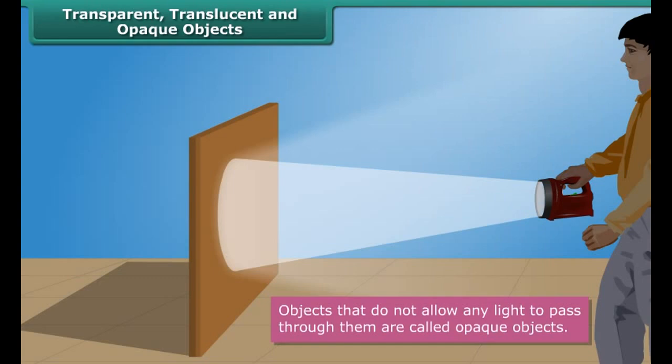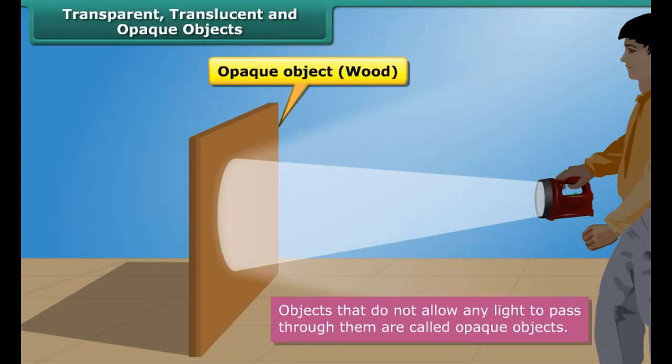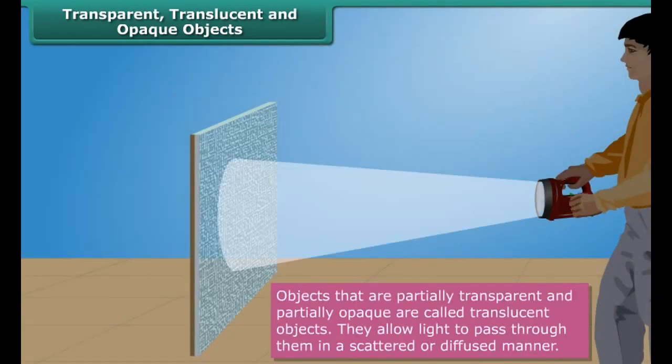Objects that allow light to pass through them are called transparent objects. Most of the light falling upon a transparent object passes through it to the other side, thereby allowing us to see through them. Glass, clean air, and pure water are examples of transparent objects.